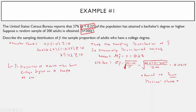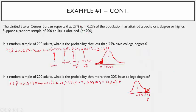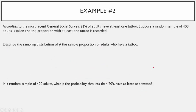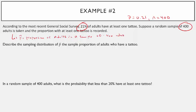The hard part is figuring out what mu sub p-hat and sigma p-hat are; once you have those, the calculator makes it straightforward. Let's do another one. According to the most recent general social survey, 21% of adults have at least one tattoo, so p equals 0.21. A random sample of 400 adults is taken and the proportion with at least one tattoo is recorded, so n equals 400. We let p-hat equal the proportion of adults in a sample of 400 who have at least one tattoo.